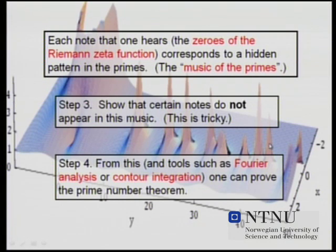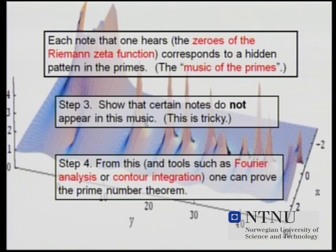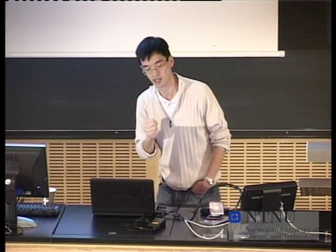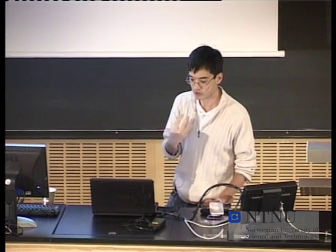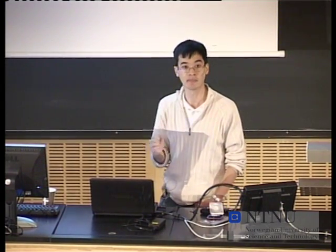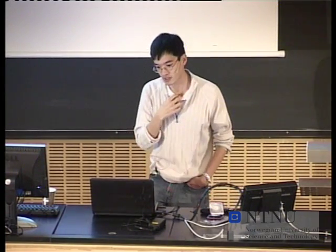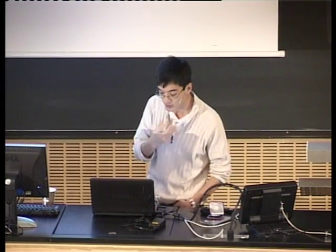The picture in the background is the graph of the reciprocal of the zeta function. Every spike you see — like this one and this one — that's one of the zeros of the zeta function. There are all these notes, and each note gives you a certain oscillation in the primes. They could be all over the place, but it is possible to prove that certain notes do not exist. Using indirect proof — similar to Euclid's theorem — there are certain bad notes which, if they existed, would cause huge visible fluctuations in the distribution of the primes. You show that these notes do not occur, and because they do not occur, the prime distribution must be very regular. You can use that with advanced mathematics — Fourier analysis or complex analysis and contour integration — to prove the prime number theorem.